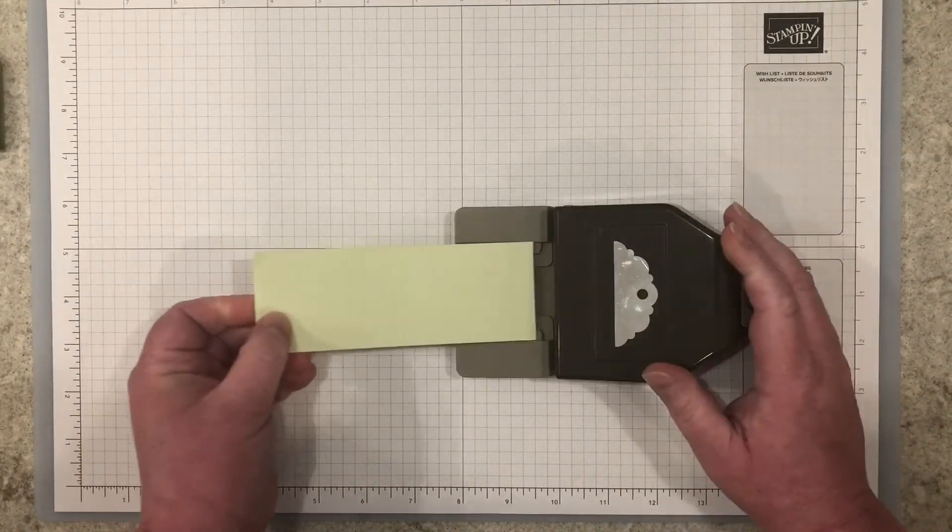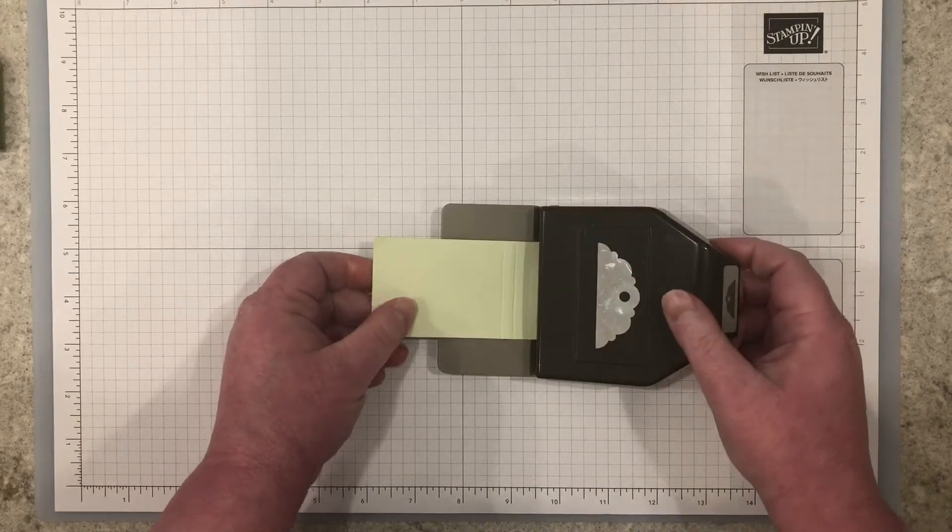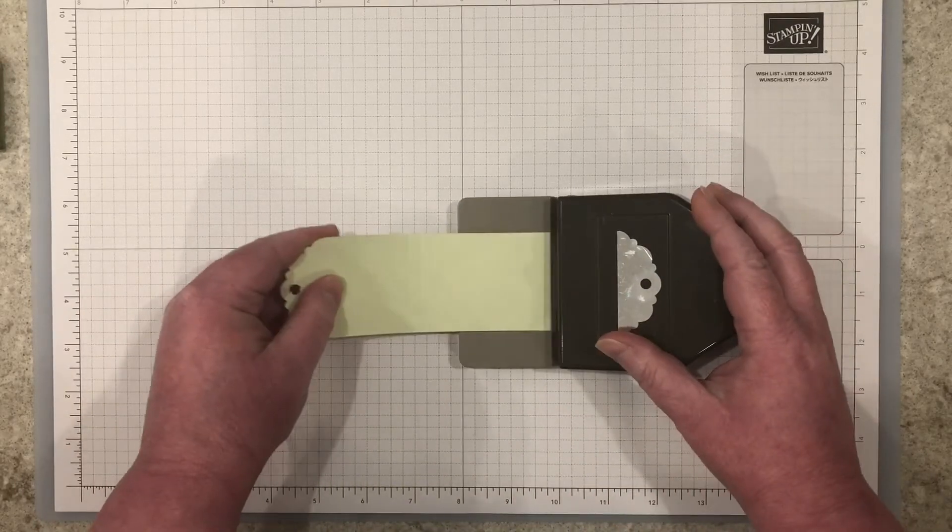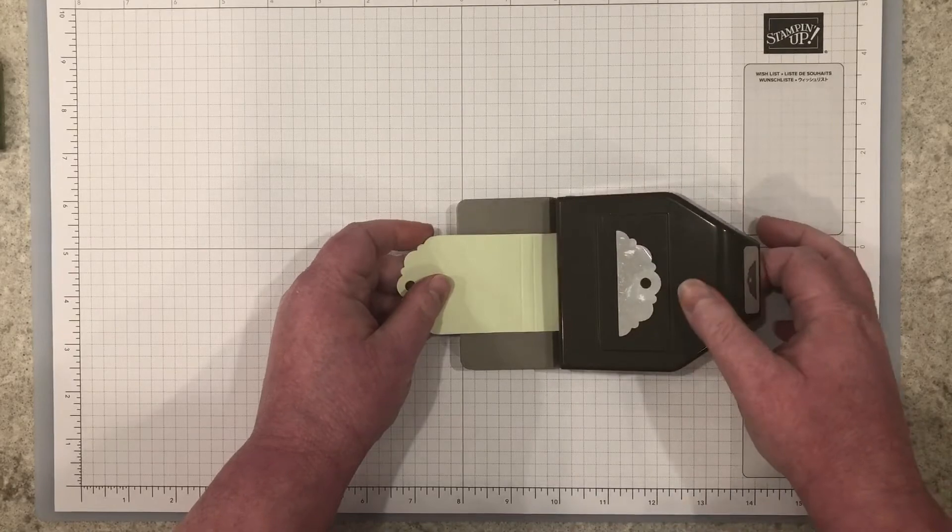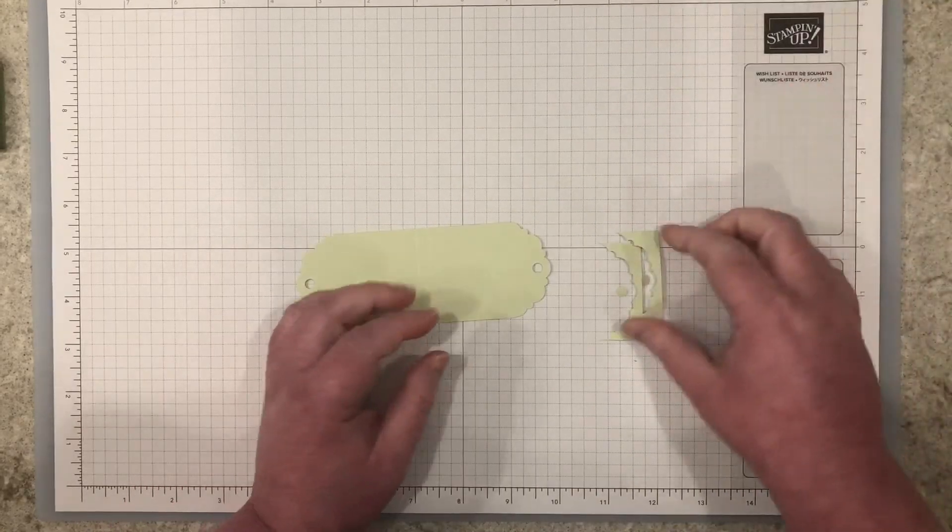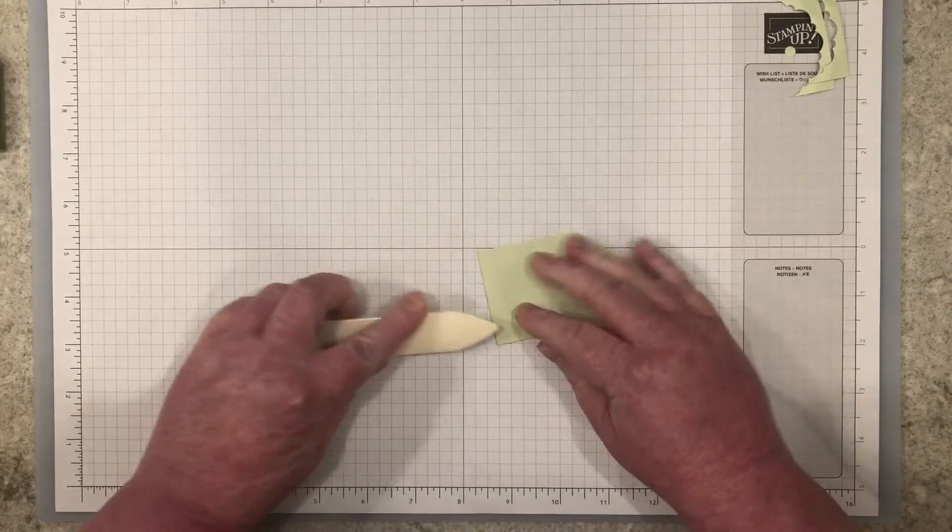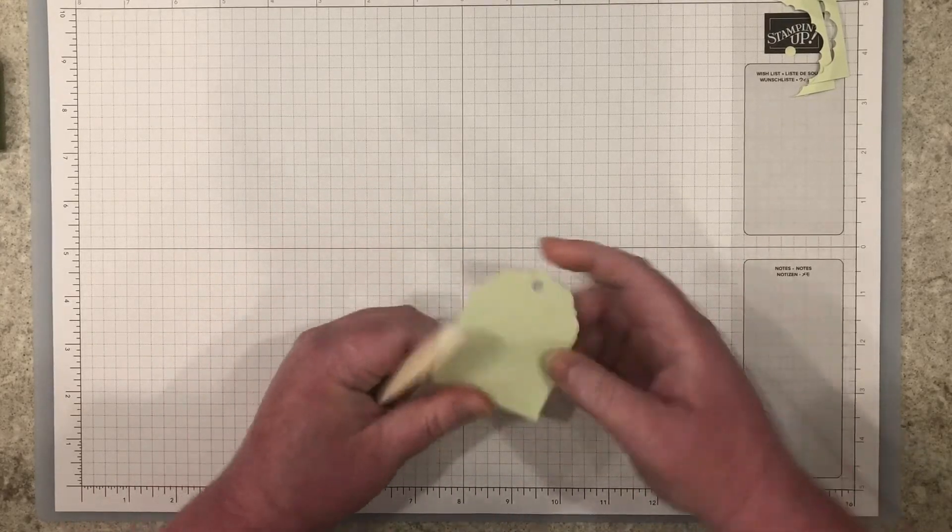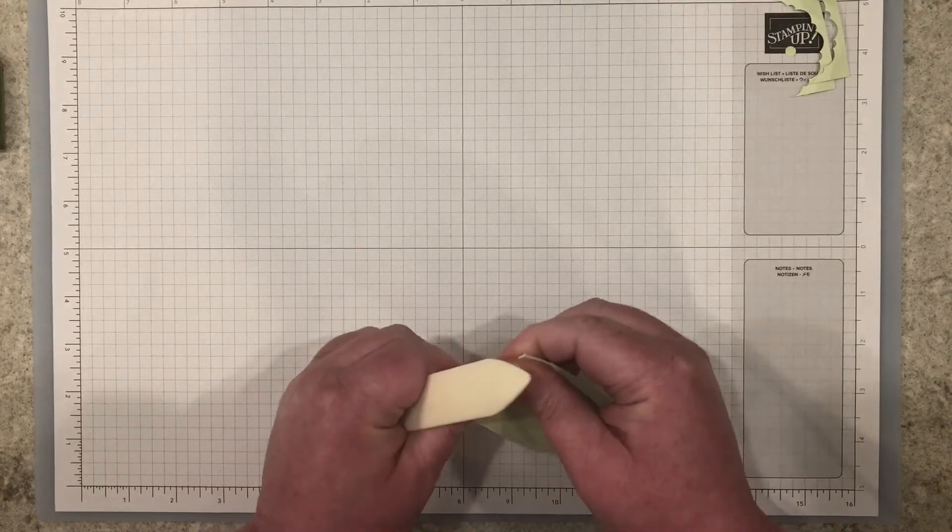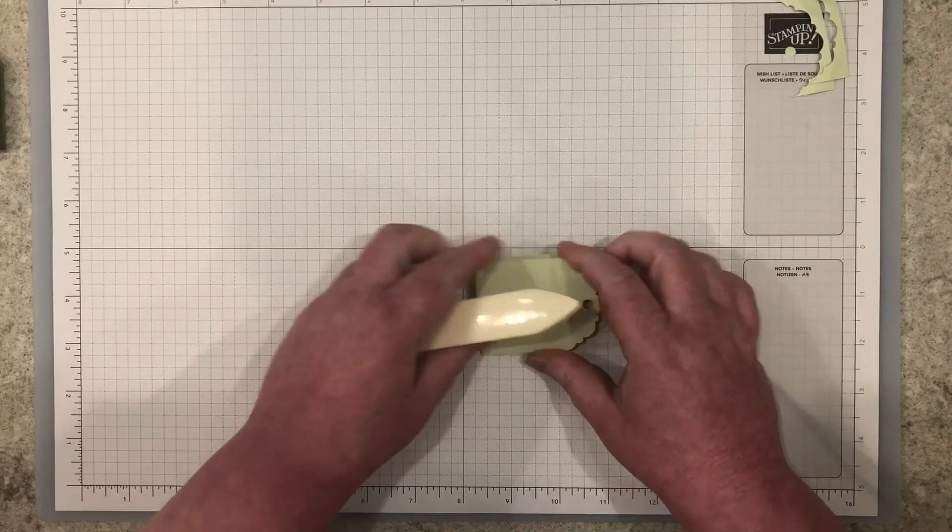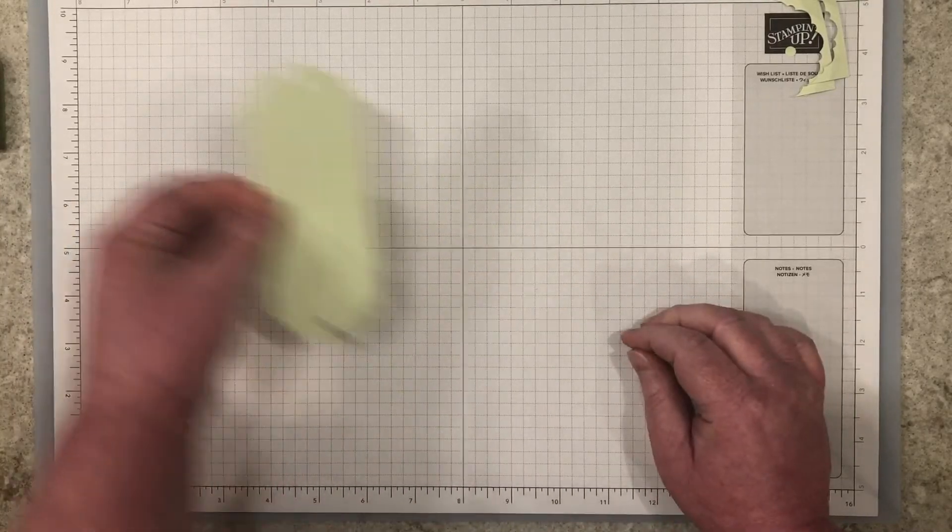Next, punch each end of the treat holder base with a delicate tag topper punch. Fold and burnish your score lines with the bone folder. You can put this to the side for now.